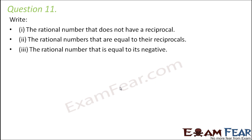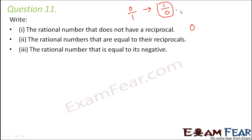Question 11: Write the rational number that does not have a reciprocal. The number is 0, because 0 is a rational number (0/1). If you try to find its reciprocal, the denominator becomes the numerator and the numerator becomes the denominator, giving 1/0 — which is not defined. So 0 does not have a defined reciprocal.